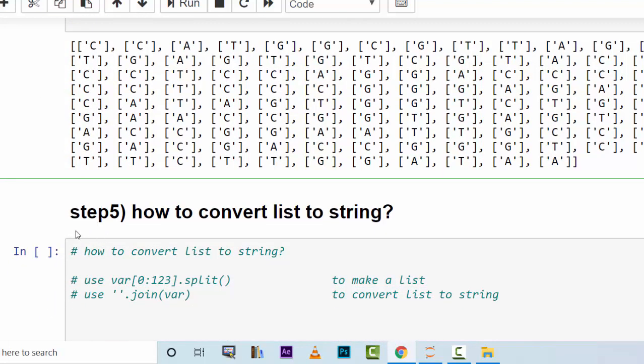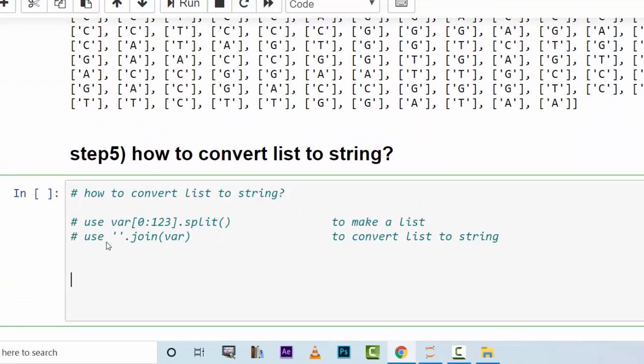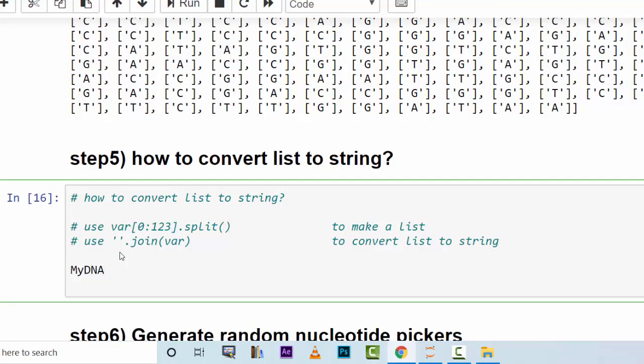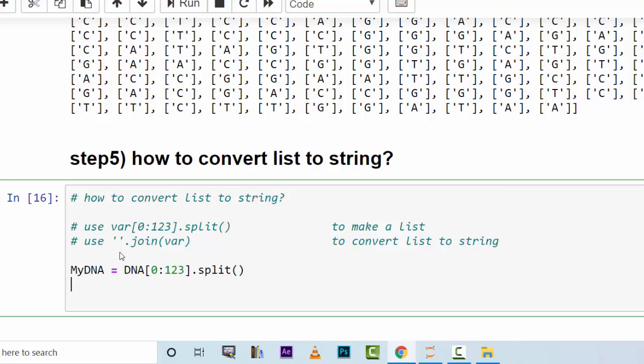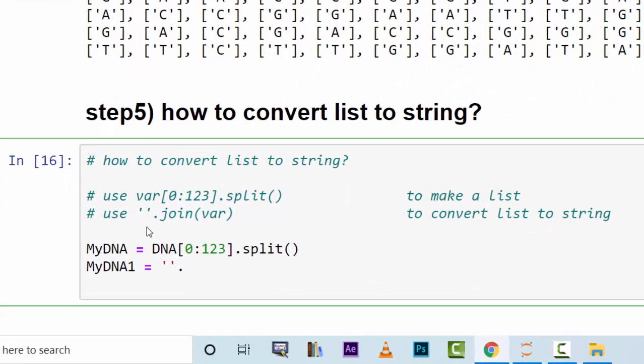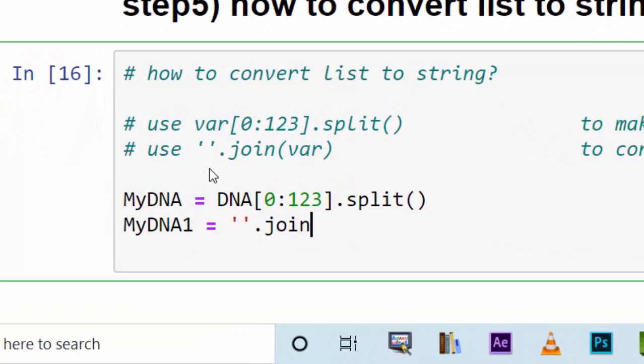How to convert the list back to a string? This is also important. There are several methods for this one also. We have x that contains the list, and you can actually say myDNA equals DNA from 0 to 123.split. This makes it a variable that contains list DNA sequence. Now to change this, you could say myDNA to be changed. This is equal to open close quotation dot join, the name of the variable that you want to change, and then show it.